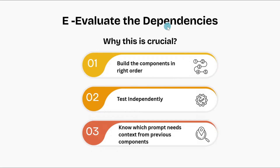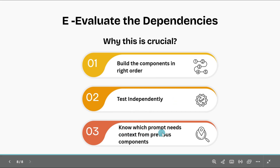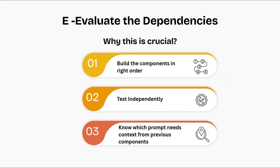Finally, E — Evaluate the dependencies. This is about understanding how your components connect and depend on each other. Ask yourself: which component needs data from other components, what's the order of operations, and what happens if one component fails? Understanding these dependencies means you can build components in the right order, test independently, and know which prompt needs context from previous components. This dependency map becomes your foundation for every prompt, every iteration, and every debugging session — it's what keeps AI from losing the plot when you are ten prompts deep.